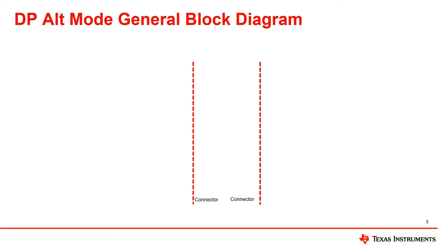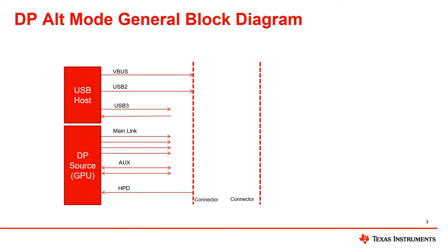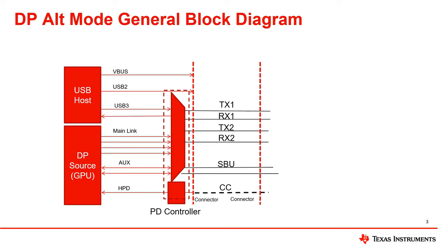Next, let's look at a general block diagram of a DP alt mode design. We will start on the source side. For this particular block diagram, we have a USB host that has VBUS, USB 2, and USB 3. Next, we have a DP source — a GPU in this case — that has the main link, aux, and HPD signals. In order to support the DP alt mode implementation, a power delivery, or PD, controller is needed. On the source side, the multiplexer, or MUX, takes USB and DP lanes and switches them to the appropriate high-speed lanes of the USB-C connector.